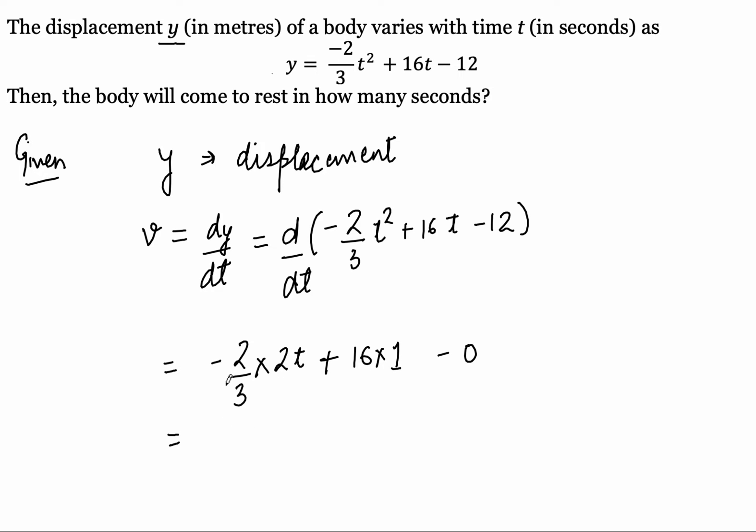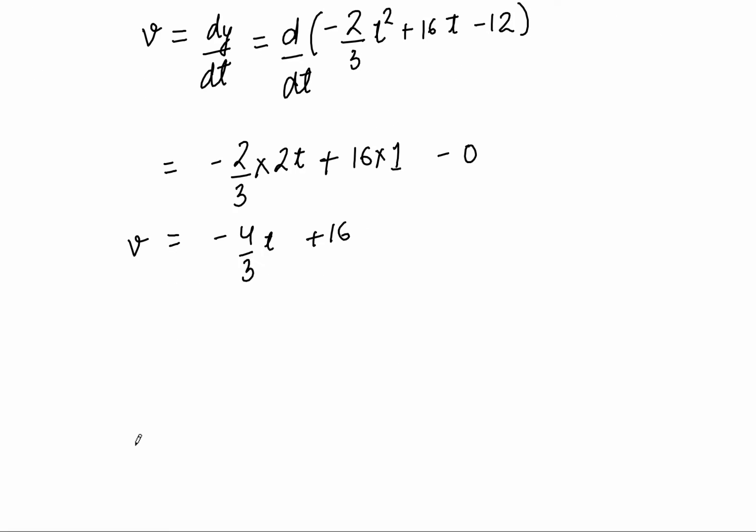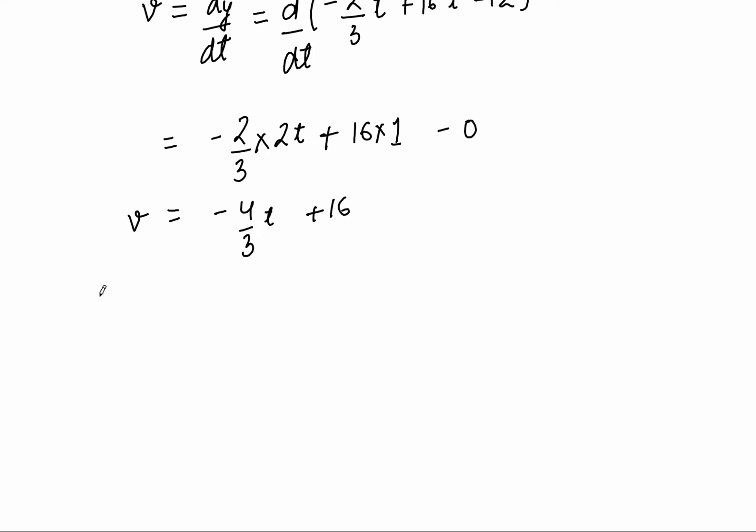It is coming out to be minus 4 upon 3 t plus 16, and this is v. Now they have also told us that we have to find the time for which the body is coming to rest. When a body comes to rest, we all know that we will have to put v, that is velocity, equals zero, or our speed should be zero.